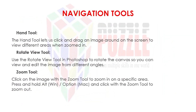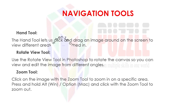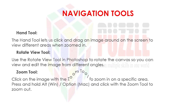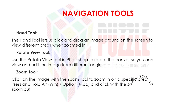Hand tool: lets you click and drag an image around on the screen to view different areas when zoomed in. Rotate view tool: use it to rotate the canvas so you can view and edit the image from different angles. Zoom tool: click on the image to zoom in on a specific area. Press and hold Alt (Win) or Option (Mac) and click with the zoom tool to zoom out.